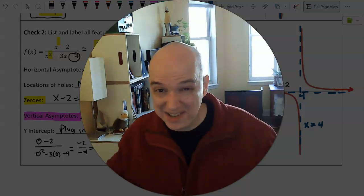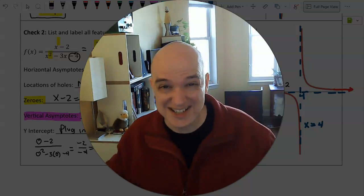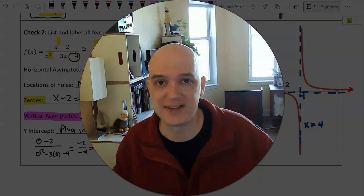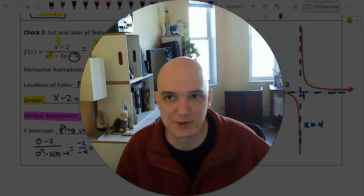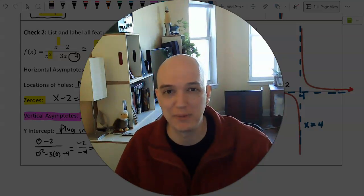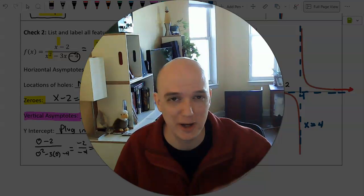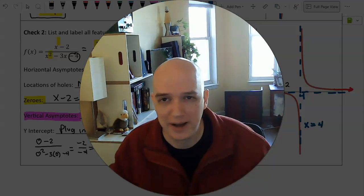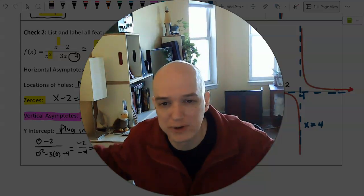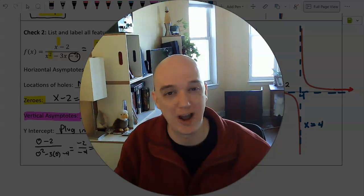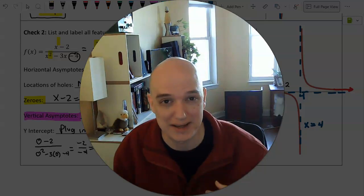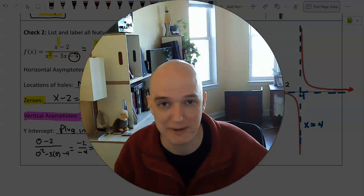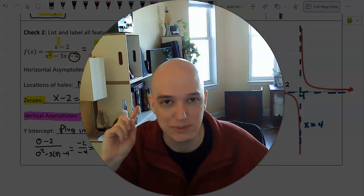We now basically know where everything is on this graph from just the equation and an unscaled graph. You really do need to know all these tests to successfully graph a rational function, which is why this video focused on the tests and didn't do any graphing yet. The next step is to put it all together and start graphing, but we'll do that next time. Thanks for watching — let me know what questions you have, and I'll see you next time.